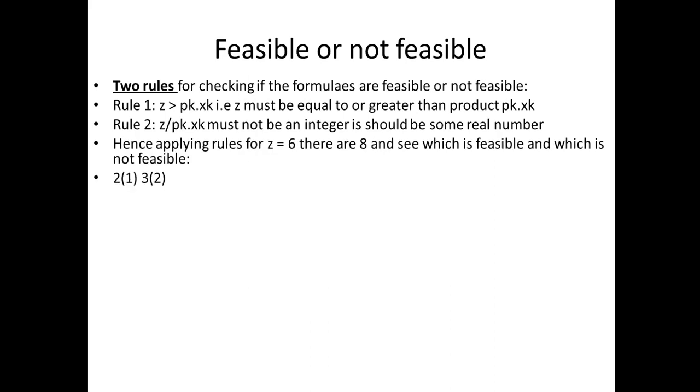Let us do it for all the eight different combinations that you found out. 2(1) 3(2), if I apply both the rules, it is feasible. Now here, two twos are four, right, six divided by four. If I apply rule two, Z divided by PK×XK, it should not be an integer. And in this case, six divided by four, I'm getting 1.5, it is an integer, so it is not feasible.